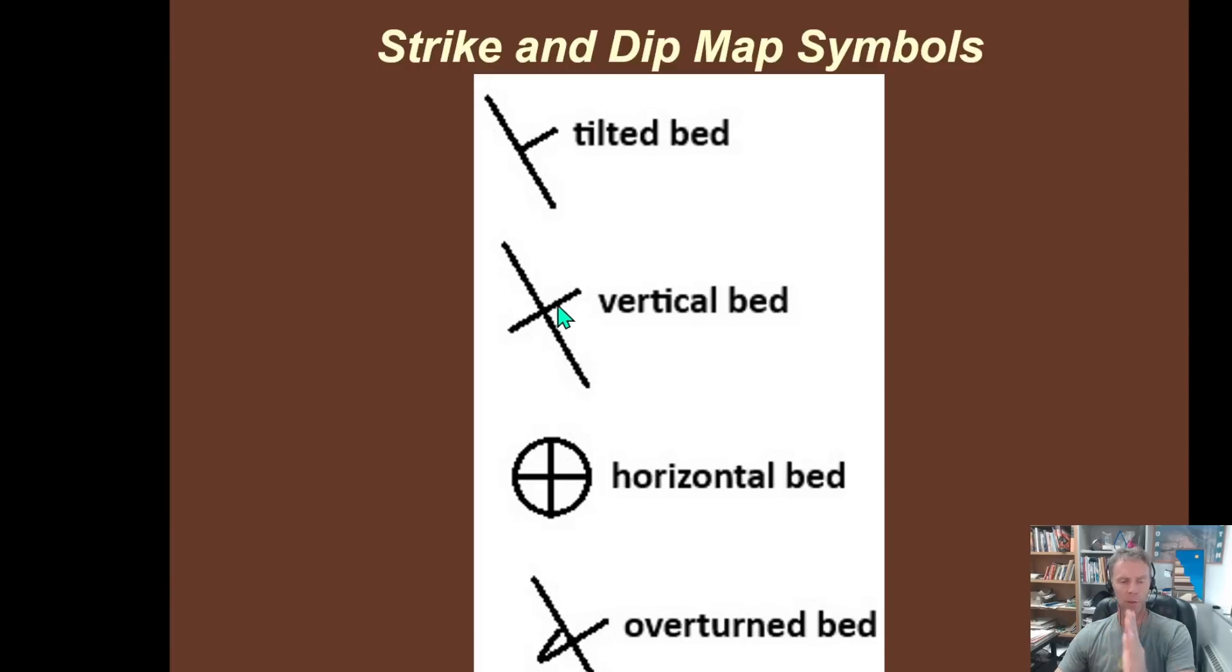Maybe the rocks are striking, they're still vertical, they have a vertical dip, but they're striking maybe north-south. In that case, the long line would be running up and down on the page. If it was east-west, they would be running across the page this way. Horizontal beds have no direction, so we just use this symbol here, just kind of a simple bullseye kind of symbol there.